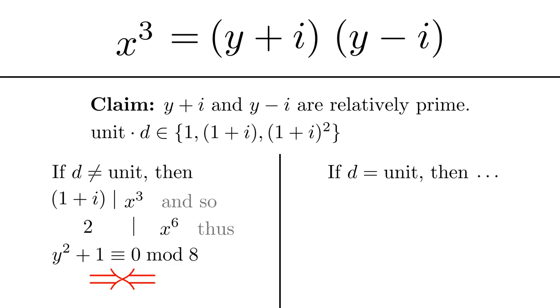And that's actually enough to prove our claim. Our claim was that y+i and y-i are relatively prime. We picked a common divisor d of y+i and y-i, and we found that that common divisor can only be a unit.